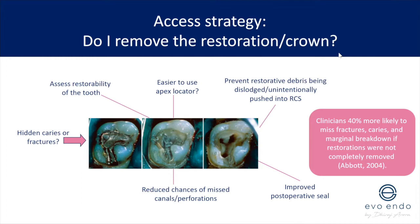Pre-endo build-ups reduce the chances of missed canals and perforations — removing the restoration enhances your visualization, making perforations and procedural errors less likely. Open preparations make it easier to locate canals, and taking that restoration out hasn't compromised the tooth at all because you've only removed a restoration. Clinicians are 40% more likely to miss caries and marginal breakdown if restorations are not completely removed — four out of ten is quite a lot.